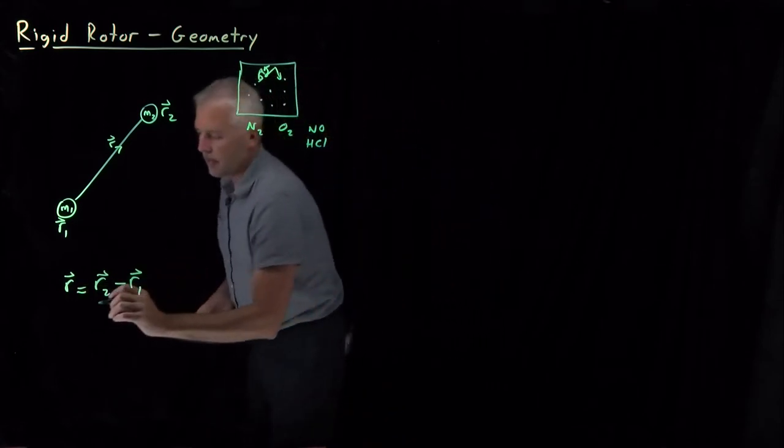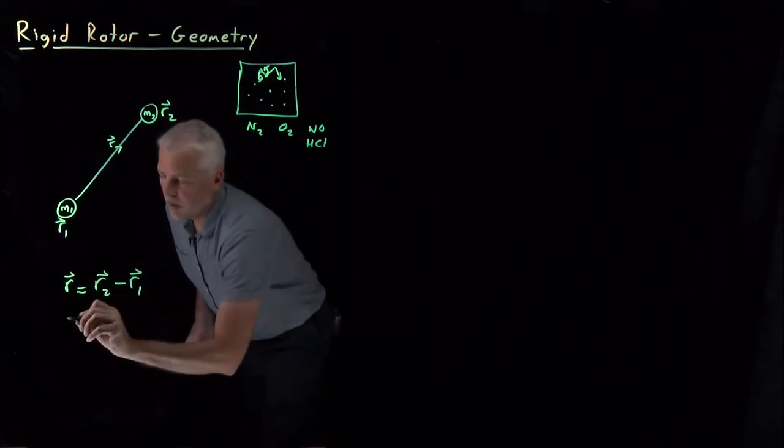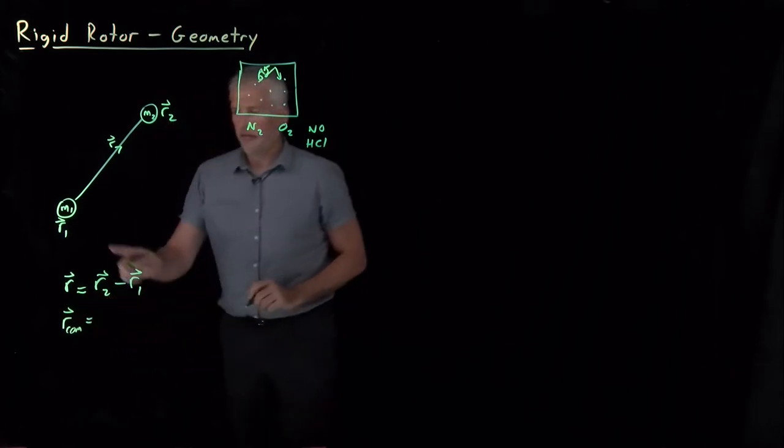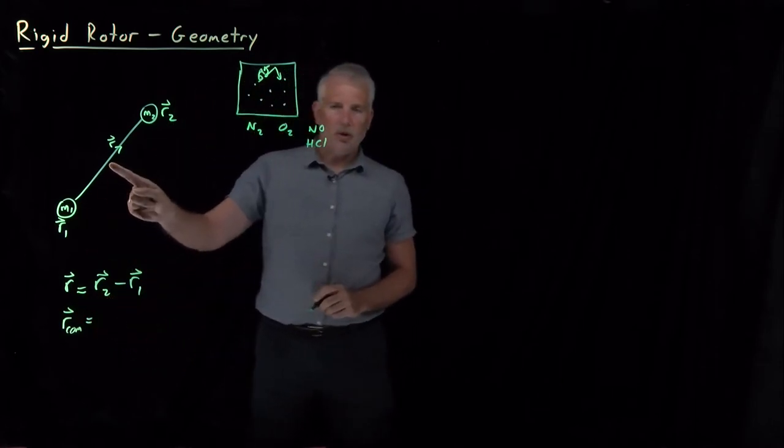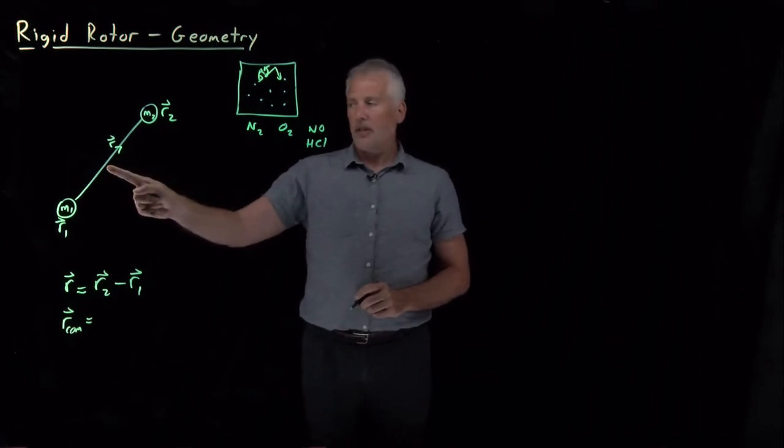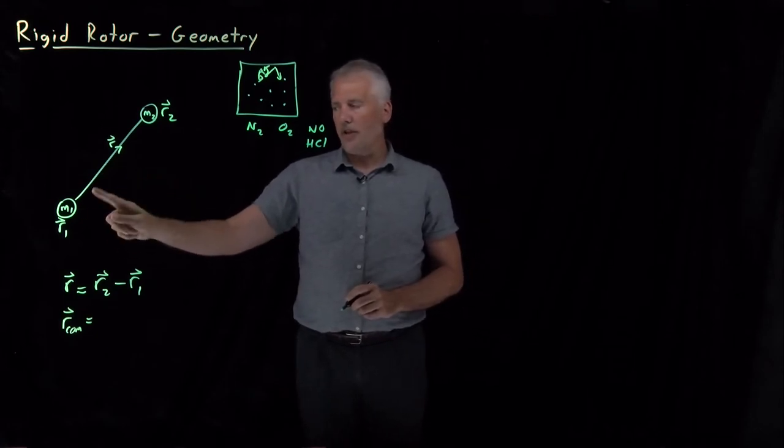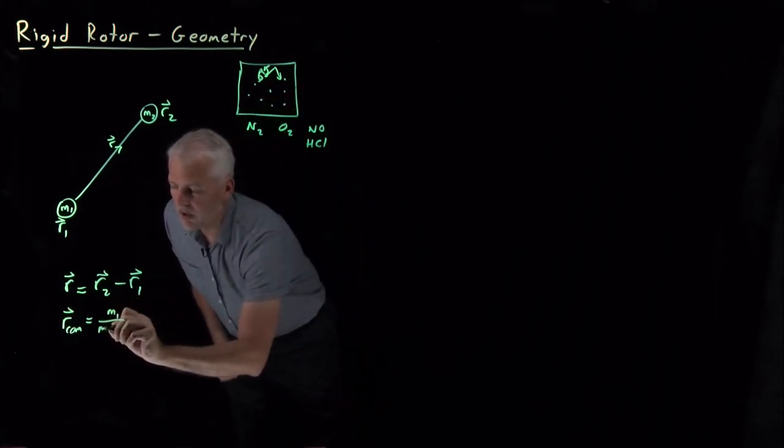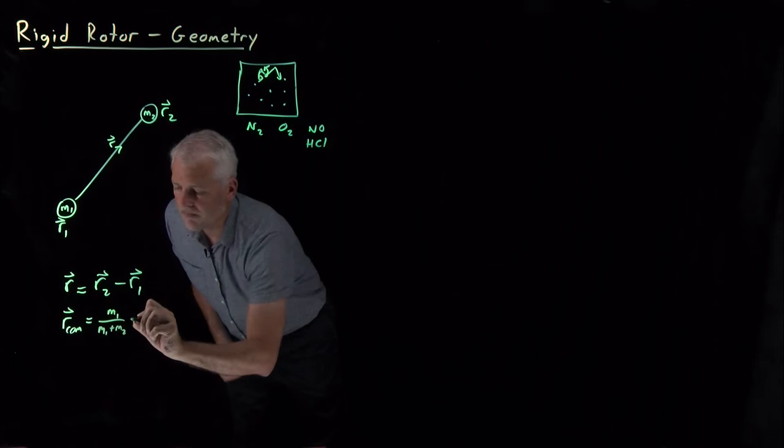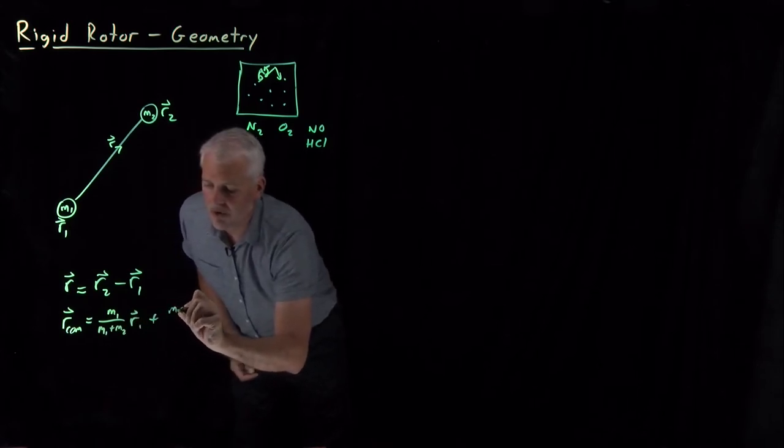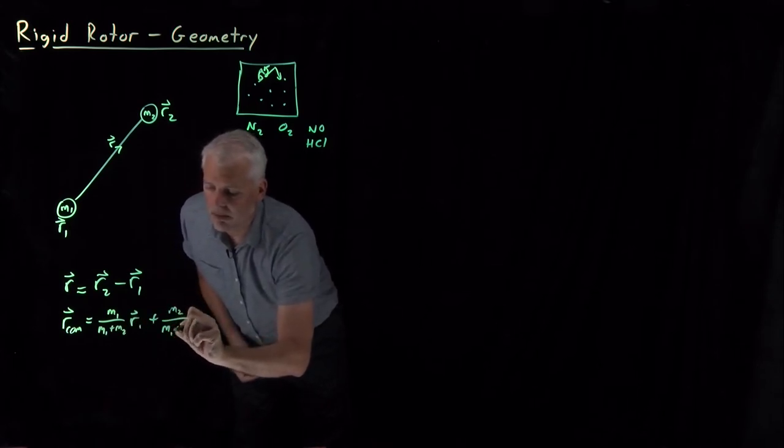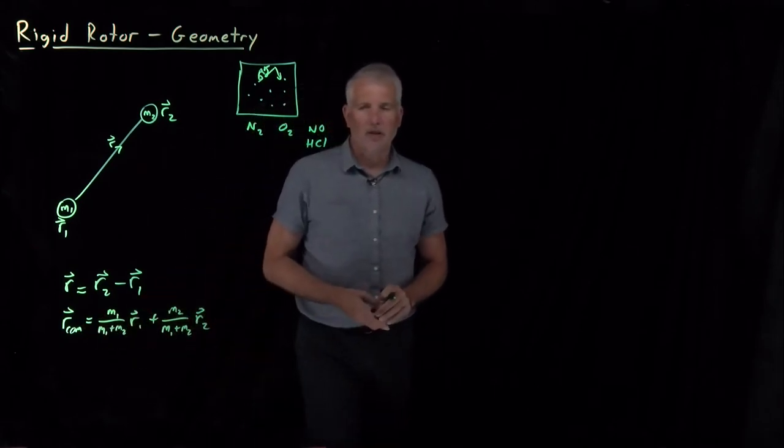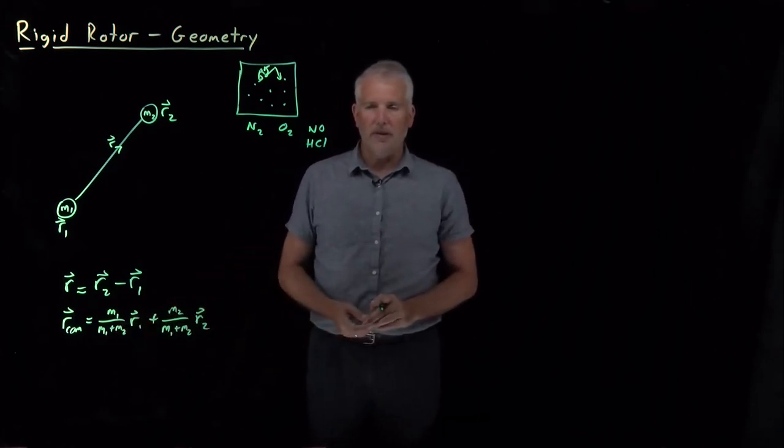There's another important quantity we can describe, which is the center of mass of the molecule, the position of the center of not atom 1 or not atom 2, but the center of the molecule. If it's a homonuclear diatomic, the center is in the middle. The center of mass, though, is weighted a little heavier towards whichever atom is heavier. In particular, M1 over M1 plus M2 times the position of atom 1 plus M2 over the sum of those two masses times R2, that's the definition of the center of mass. That'll give me a position in space closer to the heavier atom.